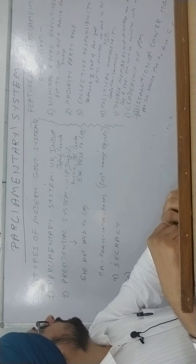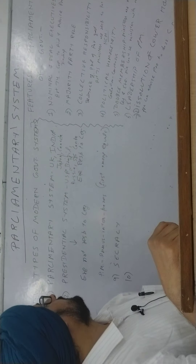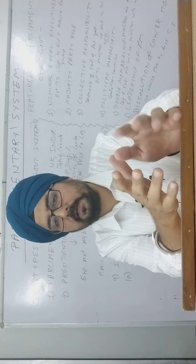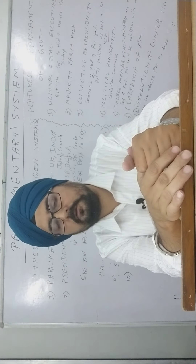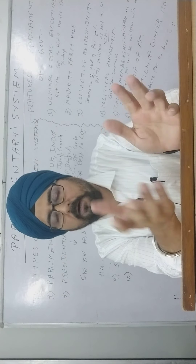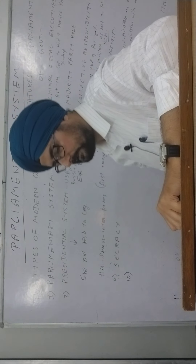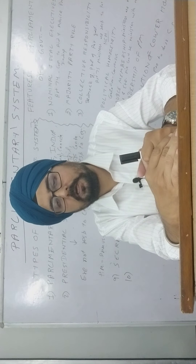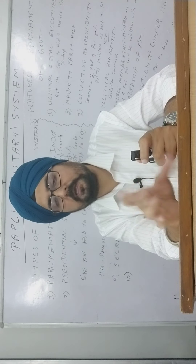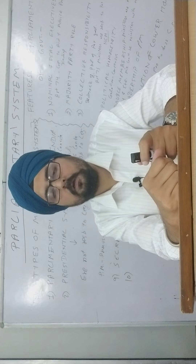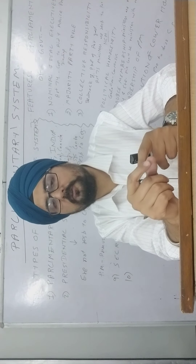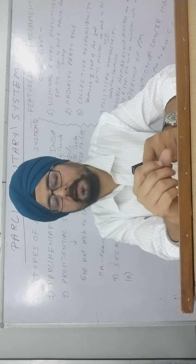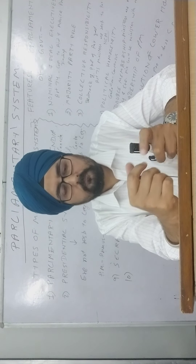So the topic is parliamentary system. In modern democracies, basically two types of systems of government are there: parliamentary form and presidential form. Parliamentary form we have in India, and we borrowed it from the United Kingdom. Whereas the presidential system is prevalent in the United States of America, in Russia, in Brazil, and some other countries.